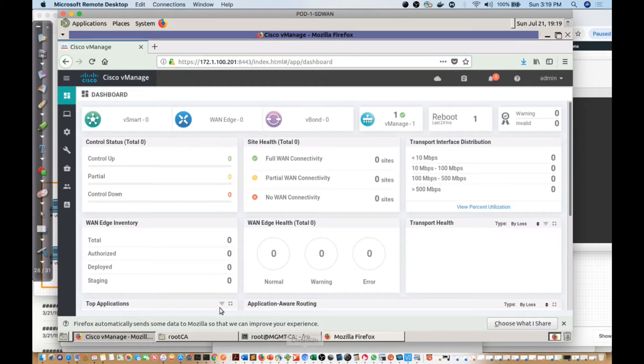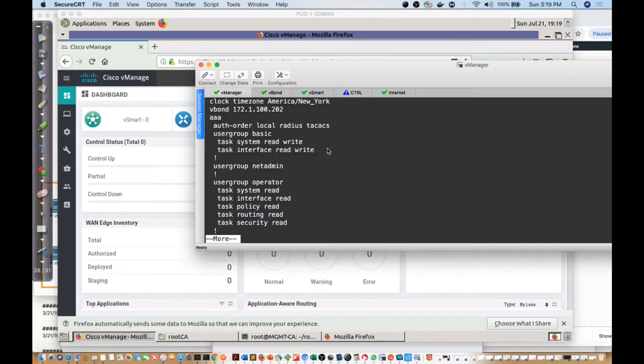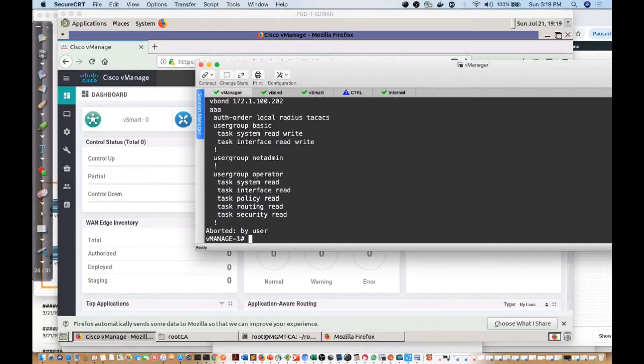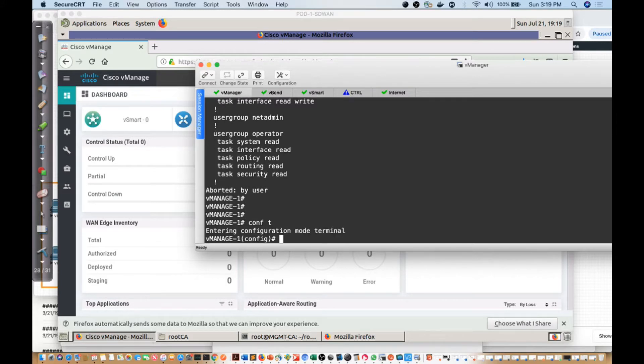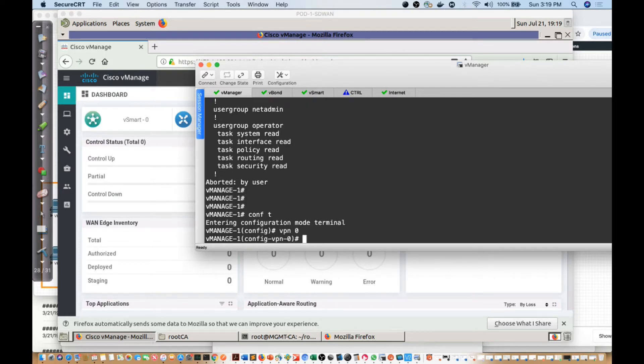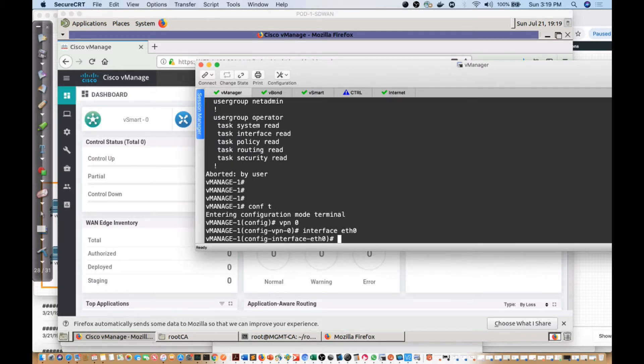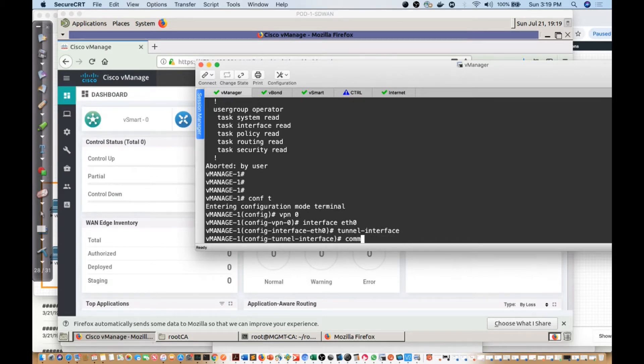So we want to fix that. I'm going to go into my SecureCRT session and start with vManage. From the vManage, I'm going to go into config T, go into VPN 0, go to that interface we used - Ethernet 0 - and specify my tunnel interface. Then I'll say commit and quit.